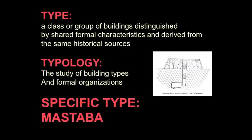With mastabas comes another important vocabulary word: 'type,' and associated with it, 'typology.' These aren't specific to Egyptian art but are words architects use all the time, because one big task in architecture is how to make something as mute as built form carry meaning and be legible. A type is a class or group of buildings distinguished by shared formal characteristics derived from the same historical source. In Egypt, anybody seeing a mastaba would say, 'huh, dead person there, I know what's going on.' Typology is the study of types and formal organizations — you can use typology to connect to historically embedded meanings and tweak them toward your own ends.